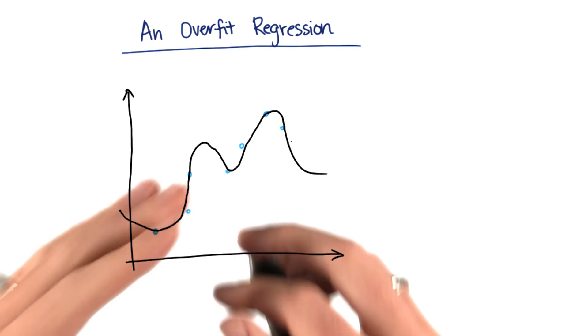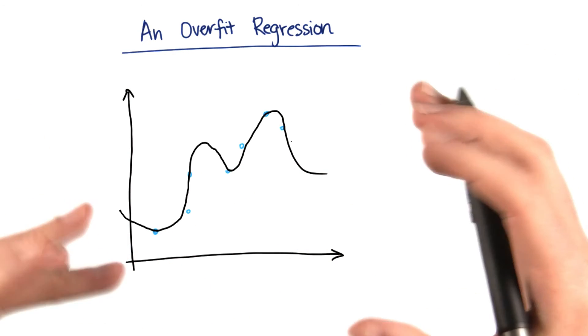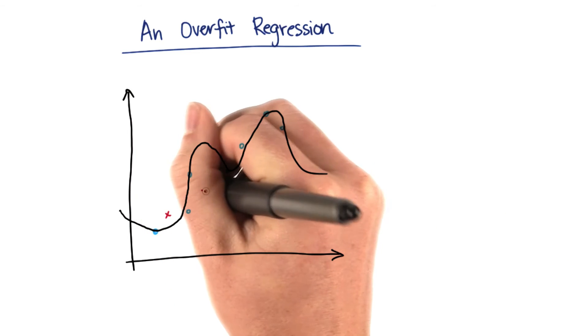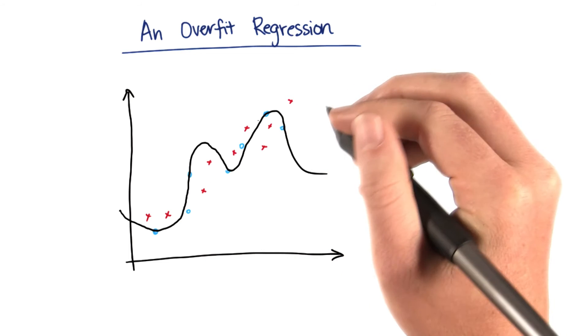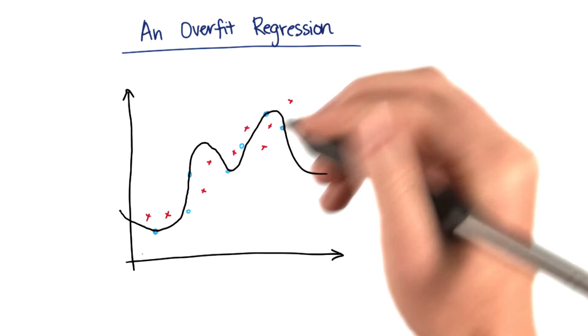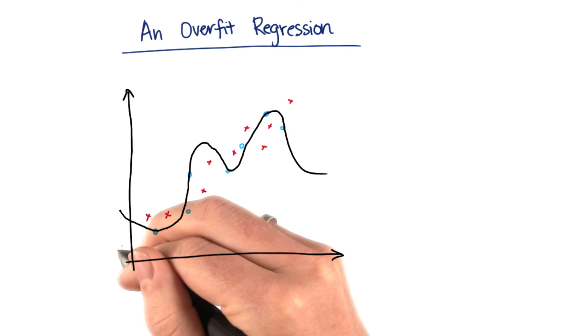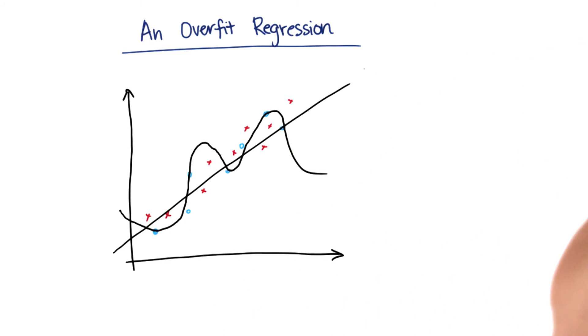However, you could imagine that if I took another sample from sort of the same population, so I just collect some more data points that are consistent with the ones that I've already collected, then you can imagine that this wiggly line is actually going to do a worse job of predicting the trend in these red data points than my original straight line does.